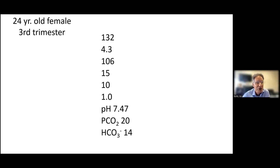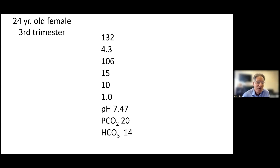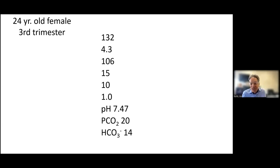Chronic respiratory alkalosis is probably the most common acid-base disorder on earth, simply because every woman in the third trimester of pregnancy has numbers like these. If you took the entire earth's population and asked what the most common acid-base disorder is, the answer must be chronic respiratory alkalosis — first because of pregnant women, and second because everyone living at high altitude has this.